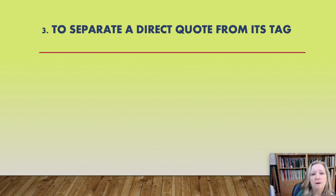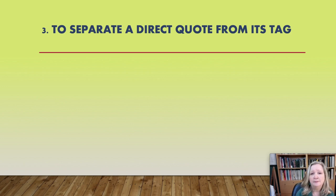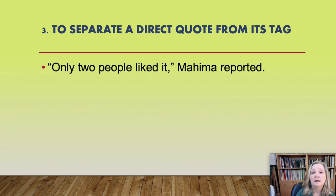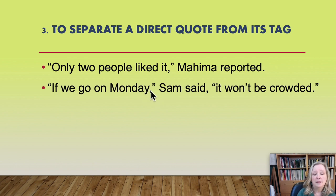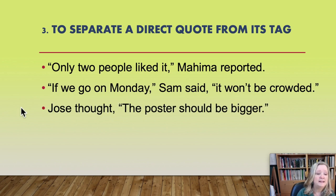A comma is used to separate a direct quote from its tag. A tag is just another word for the explanatory words, like "said Mary" or "explained Tom." For example: "Only two people liked it," Mahima reported. Or: "If we go on Monday," Sam said, "it won't be crowded." Or when the tag is at the front: Jose thought, the poster should be bigger.